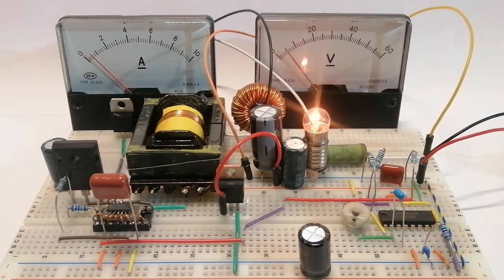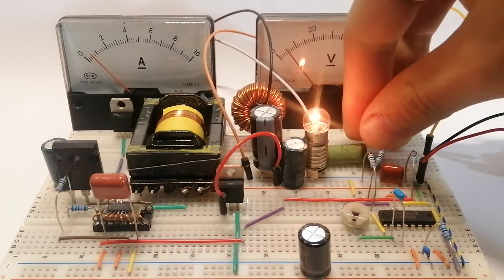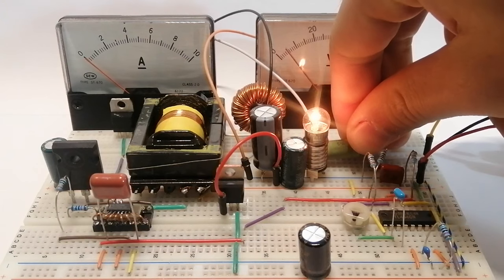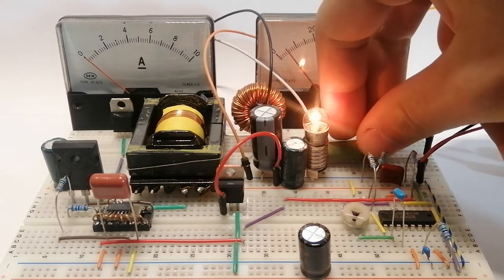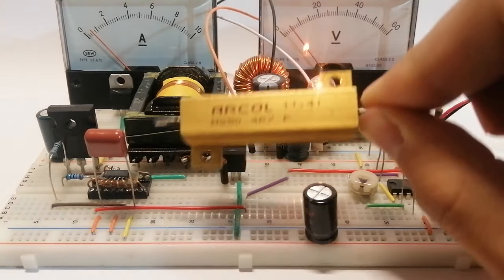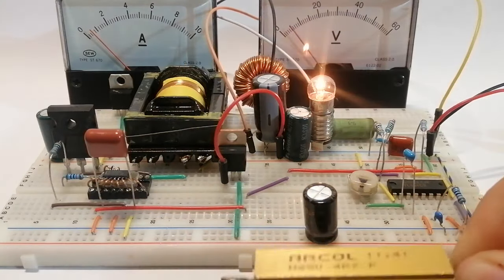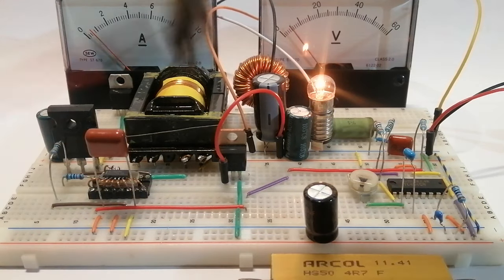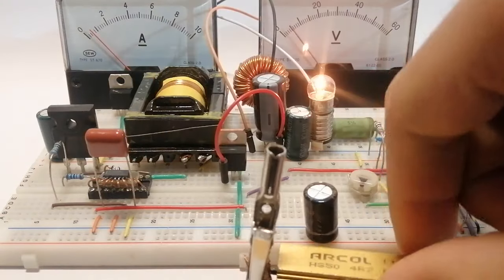If I try to connect and disconnect the 10 ohm load that I have in parallel with the light bulb, we can see that the voltage is absolutely steady but the current varies a lot. This is because most of it was going through this 10 ohm load. To test this a little bit better I'm going to use another resistor of 4.7 ohms so it's going to draw more current than the 10 ohm one, and I'm going to connect it in parallel with all the loads. We can see that once I connect it the current goes up again but the voltage doesn't change.